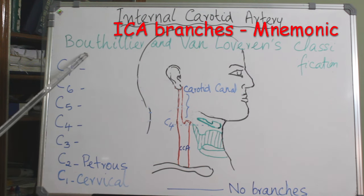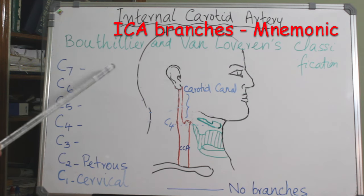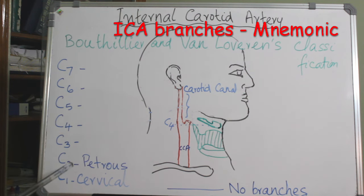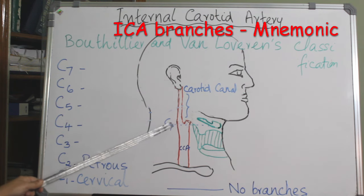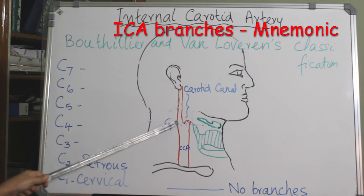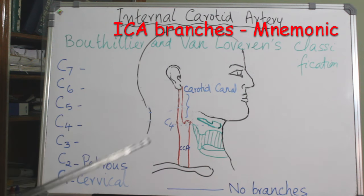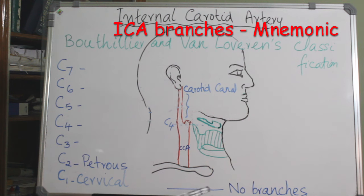The Bouthillier and van Loveren classification divides the course of the internal carotid artery into 7 segments. The first segment, C1, is the cervical segment — from the division of the common carotid artery at the level of the upper border of the thyroid cartilage up to the carotid canal of the temporal bone. C1 has no branches.